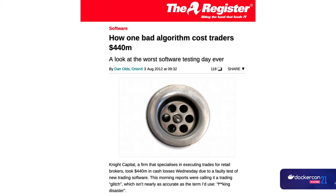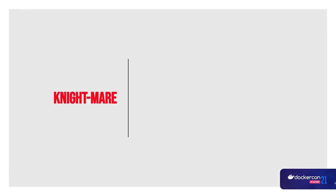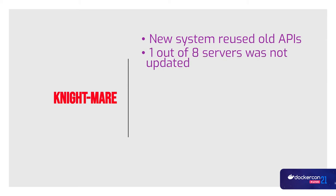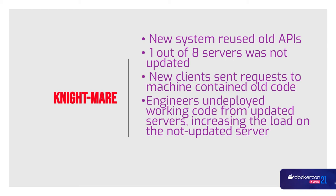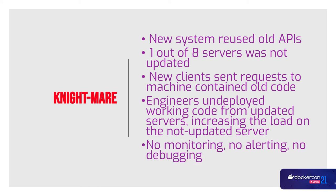Knight Capital is a firm specializing in electronic trades that wanted to update their software. They worked very hard on the system, decided to keep old APIs, but then forgot to update one server. The morning they went live, some clients sent requests to the machine running the old server. It did something different — selling instead of buying. They rolled everything back and changed all the servers, but it only took 14 minutes and they lost a huge amount of money. They had eight servers and one wasn't updated. No monitoring, no alerting, no debugging.